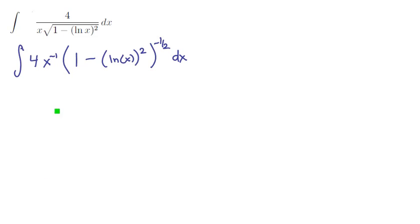So this is a nasty product, we should just try a substitution. The obvious candidate would be the largest thing in parentheses, so we're going to have u equals 1 minus the quantity ln x squared.